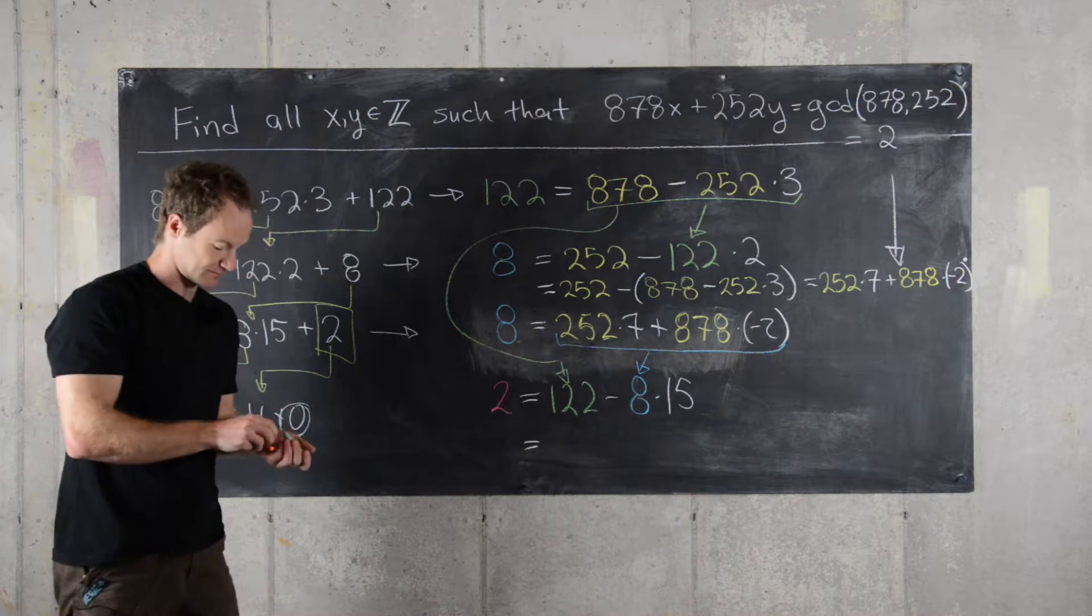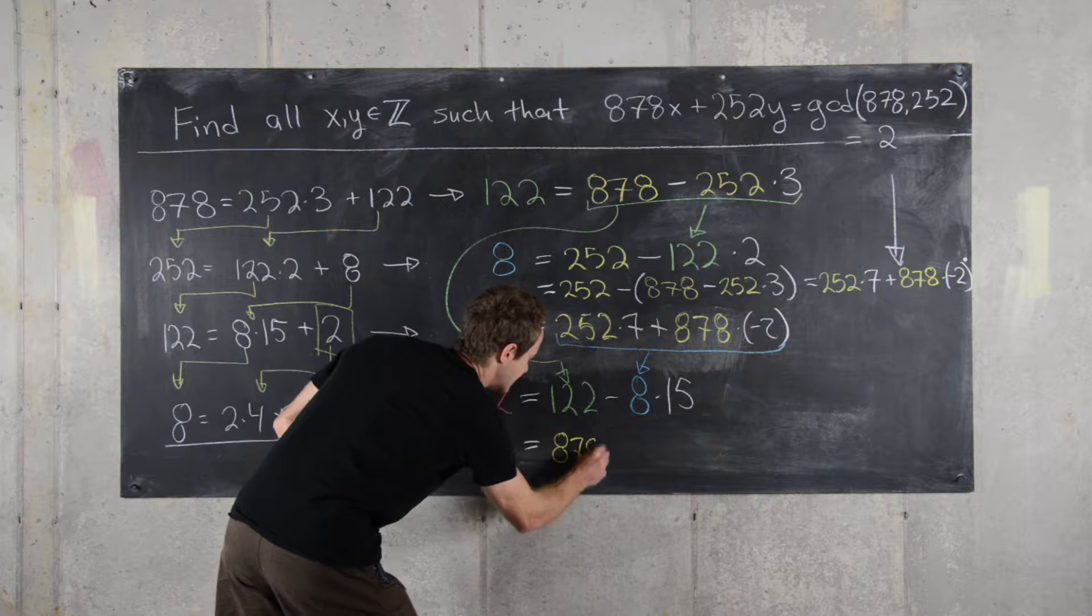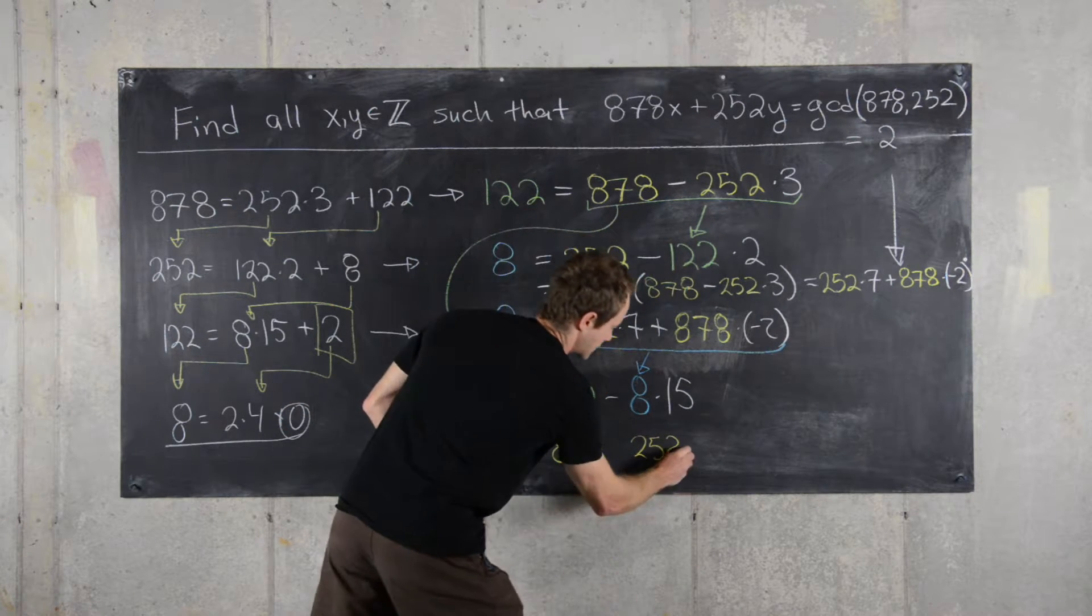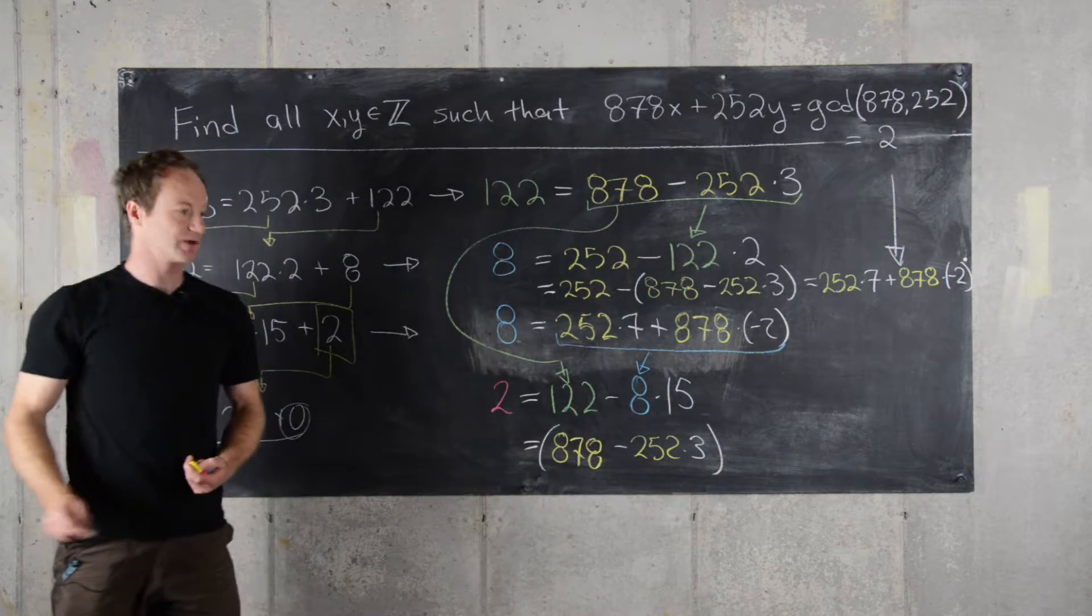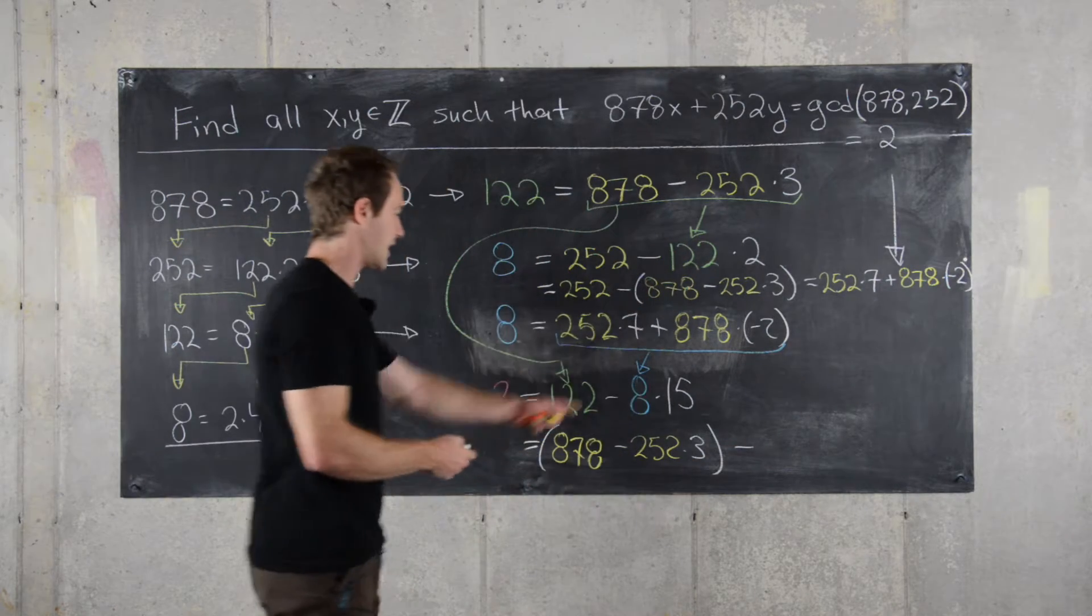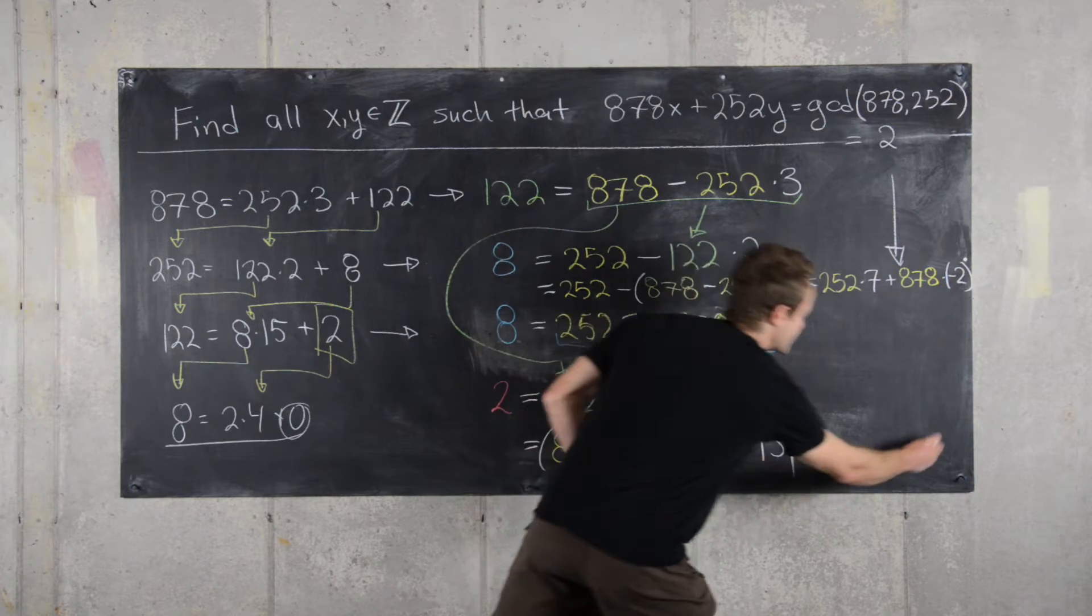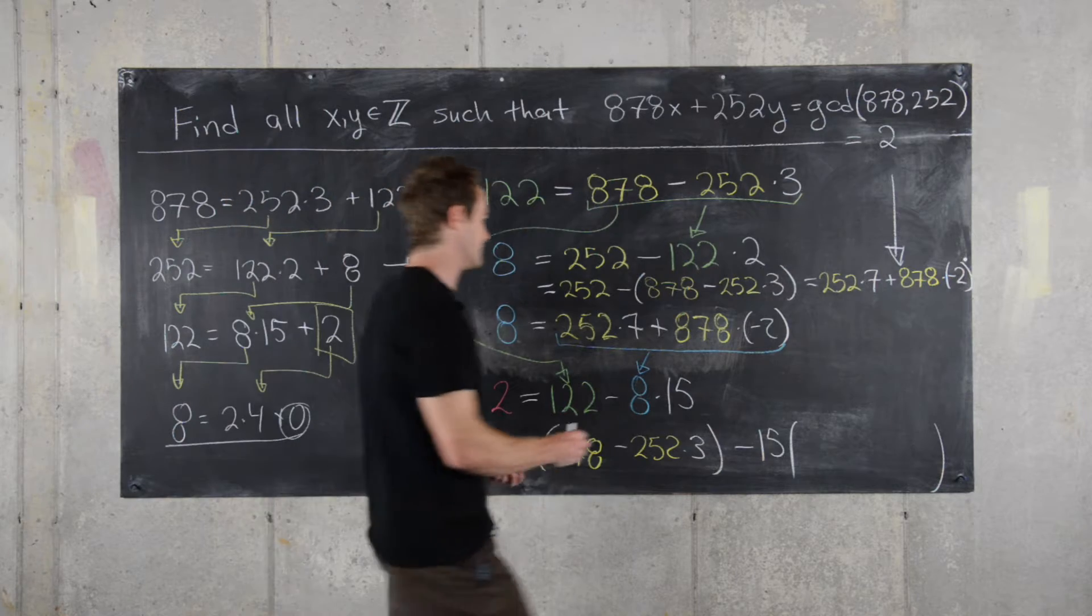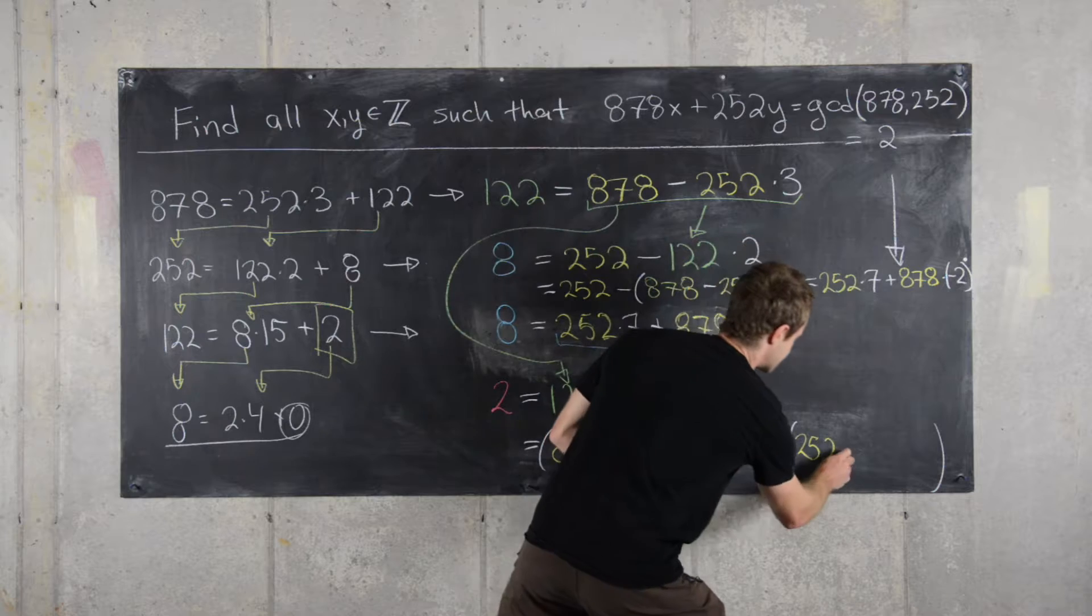So let's see what that gives us. That's going to give us 878 minus 252 times 3. And then that's going to be minus, so I'll bring this 15 out front, so minus 15 times this expression for 8. So let's write that down. So here we have 252 times 7,